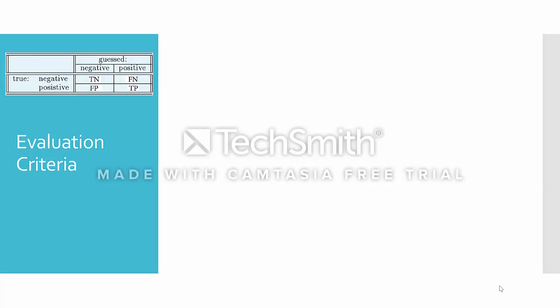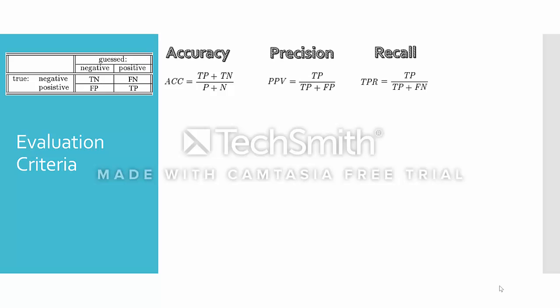To evaluate classifiers, measures are formulated from what we know as a confusion matrix. Some of those measures are accuracy, which is the percentage of examples correctly classified by the system. This measure is inappropriate when dealing with imbalanced training sets, as exhibited before. Other measures are precision, recall, and a combination of both into a more elaborate function called the F-measure.